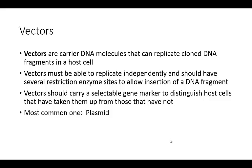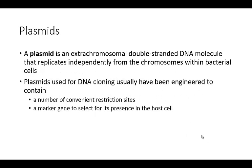The most common type of vector is called a plasmid. Plasmids are extra-chromosomal, somewhat small, double-stranded DNA molecules that replicate independently from the chromosomes — and we find these in bacterial cells. Many of these plasmids are commercially available. Depending on the price, some are more expensive than others — maybe around $100, though you might also be able to get them free or at very low cost. The commonly used ones have convenient restriction sites and a marker gene to select for their presence in the host cell.